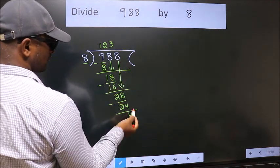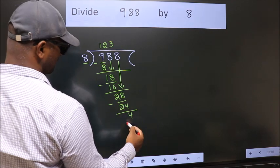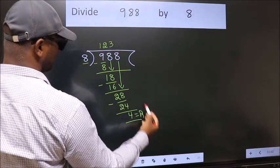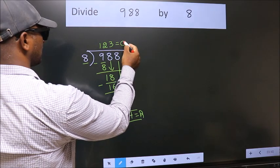No more numbers to bring it down. So we stop here. This is our remainder. This is our quotient. Thank you.